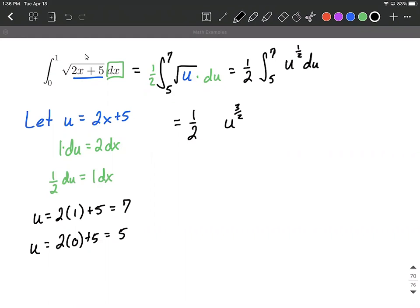Next, we wanna divide by our new exponent, or that's equivalent to multiplying by the reciprocal of a fraction. So multiplying by two over three is equivalent to dividing by three halves.